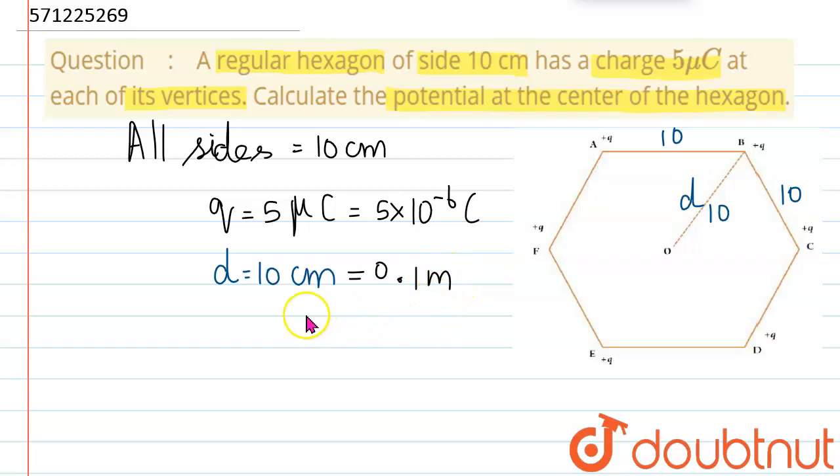Now we can find the electric potential at point O, which we'll call V. This equals 1/4πε₀ times 6Q/D, where 6 accounts for all six vertices of the hexagon.